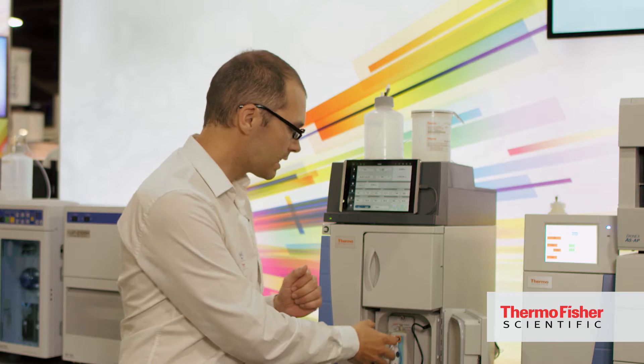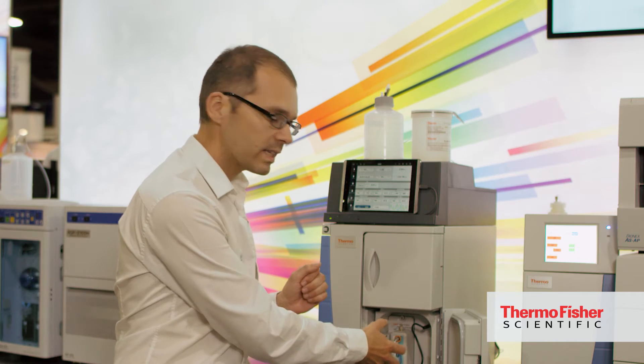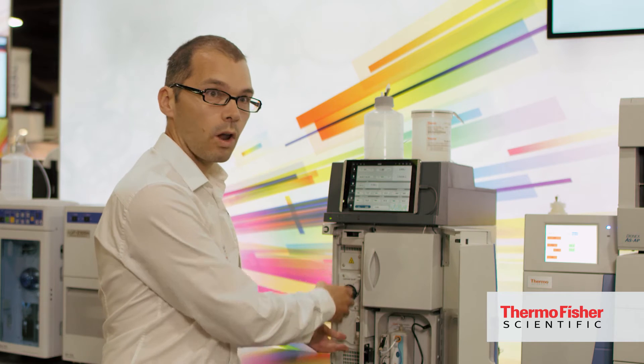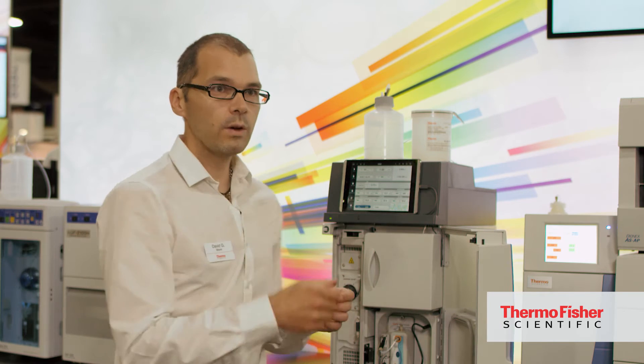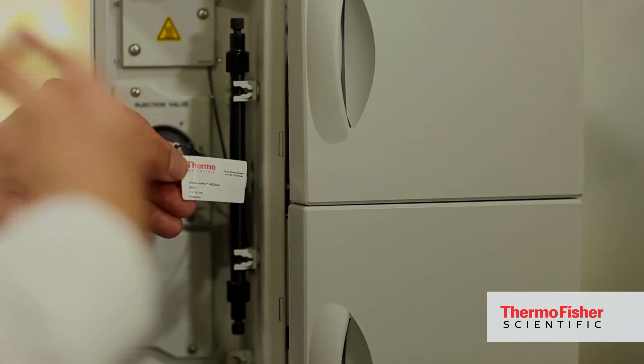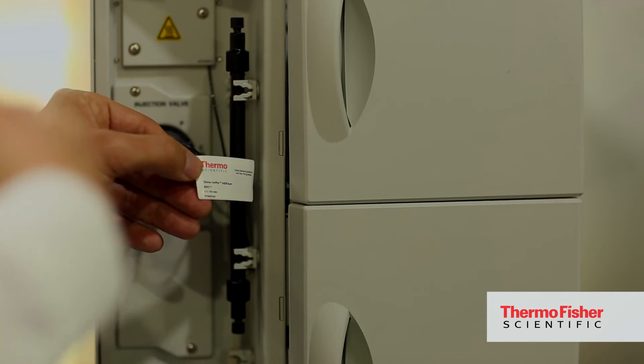We have consumables that are plugged in directly, like the suppressor here. But if we go into some of the other compartments where the columns would be, for example, those aren't directly plugged into the system. So we have RFID tags on the columns that speak directly to the system. Again, we're writing information directly to the tags, and we can keep an eye on the performance of consumables over time.